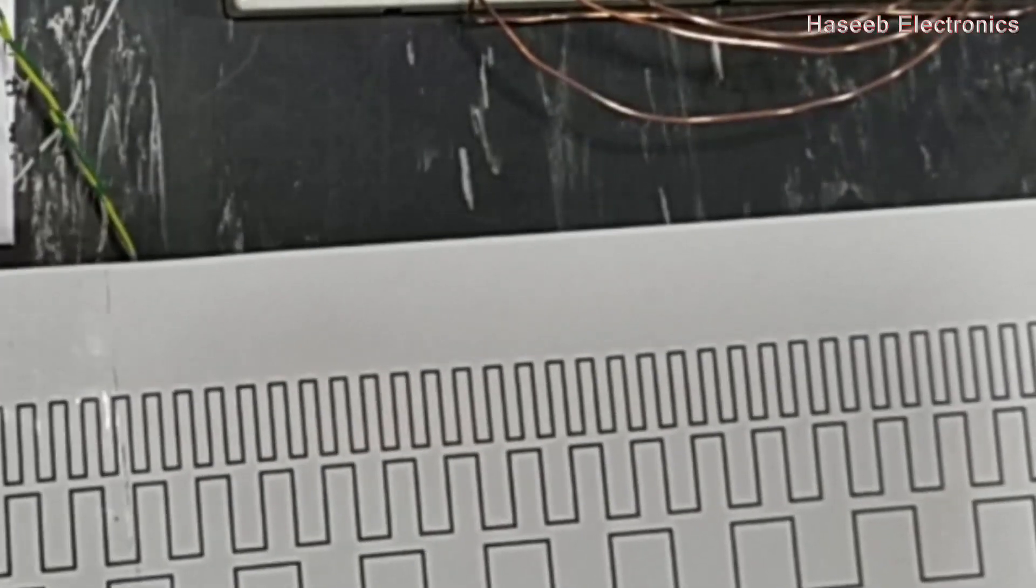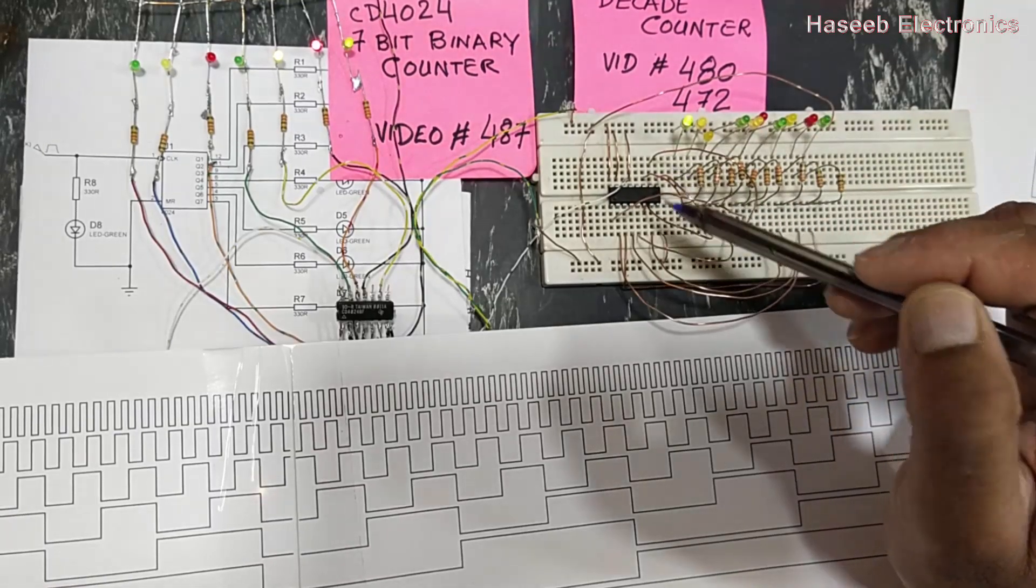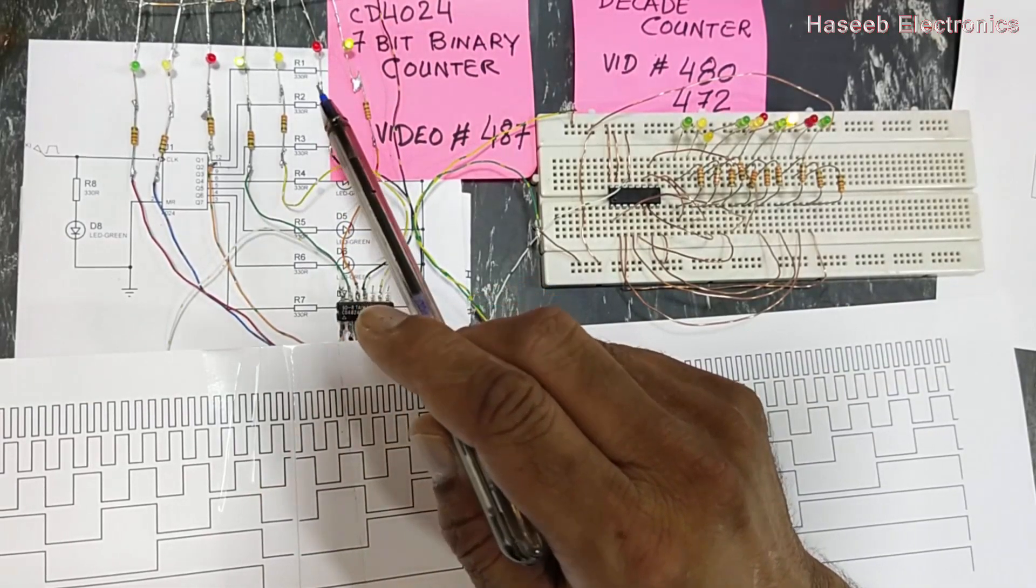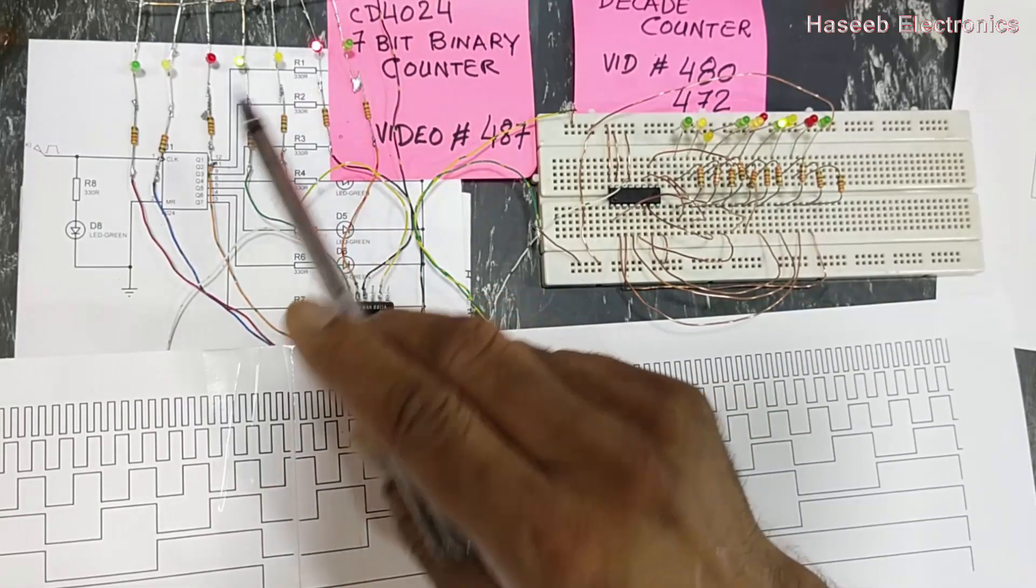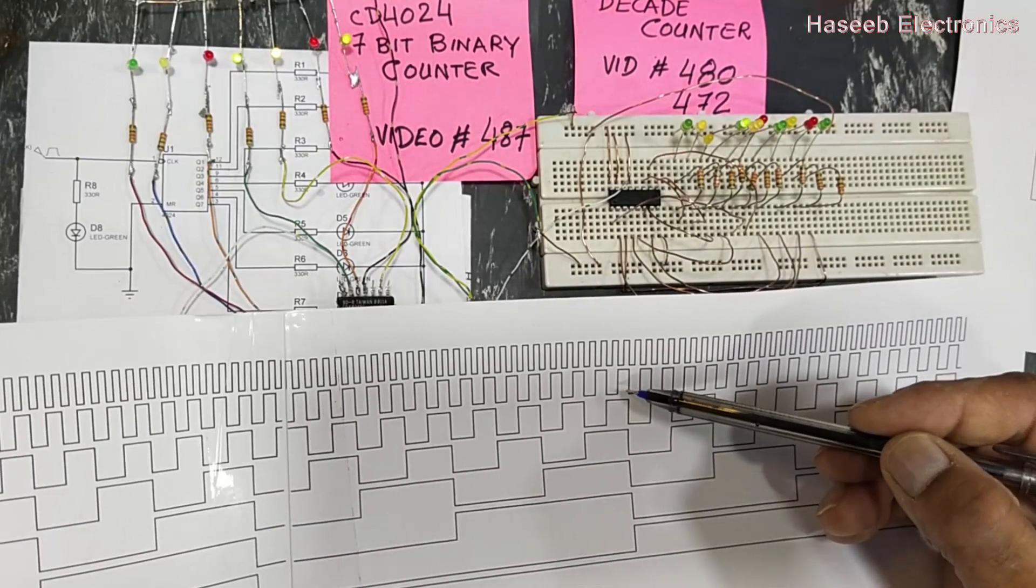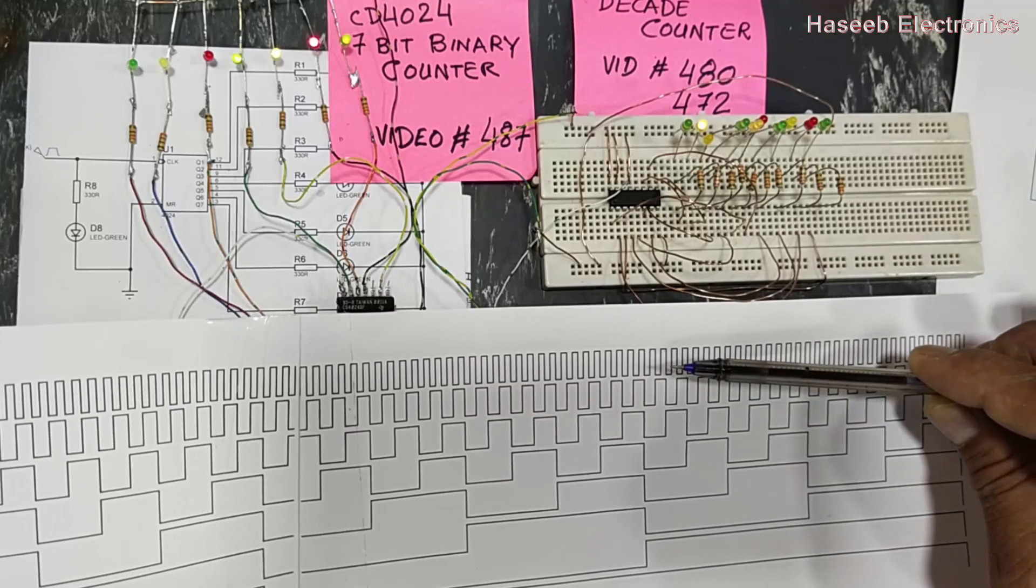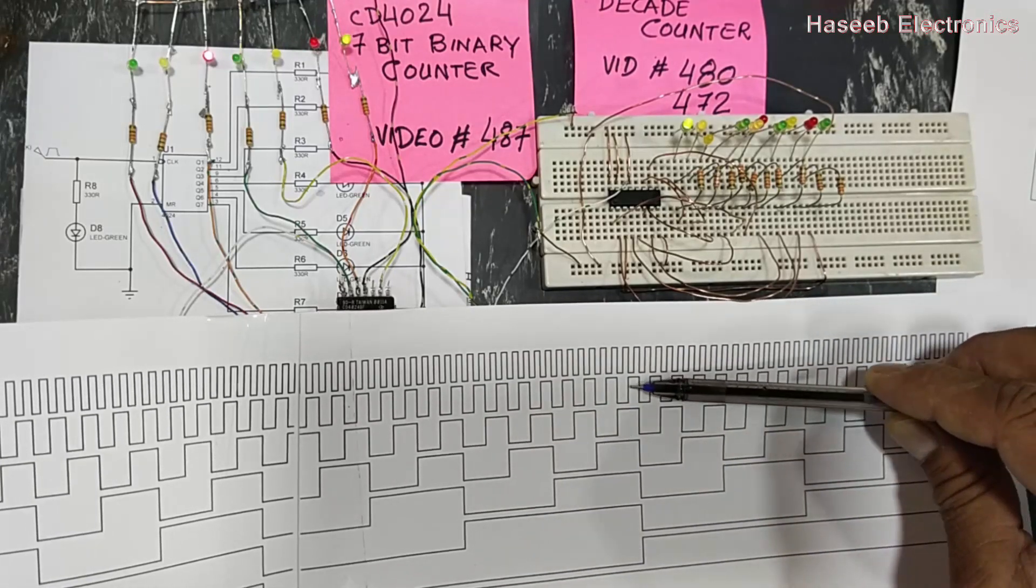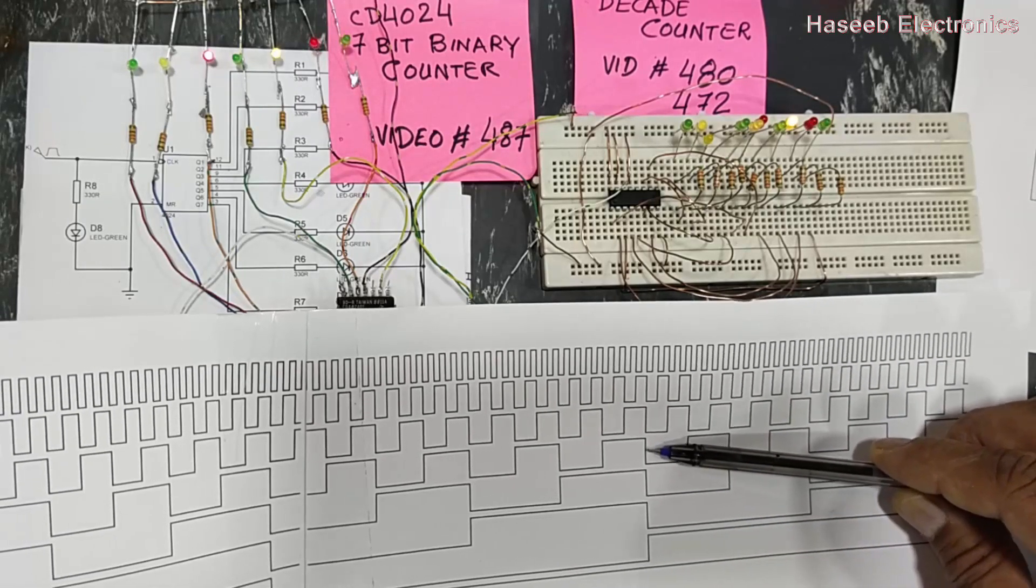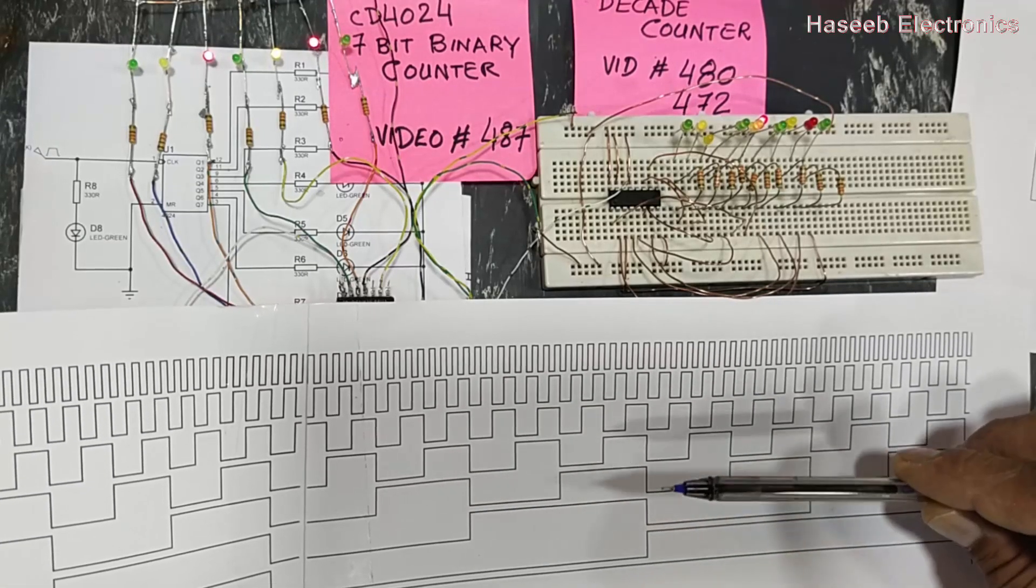This circuit after 127 pulses will reset again. Our CD4017 circuit is resetting after each 10 pulses, but this CD4024 circuit will reset after 127 pulses in this timing sequence. Each trailing edge of the first input will switch its output, and this output will cause this one to switch. This is responsible to switch this one, this to the next. Each higher stage is slaved from the first input.